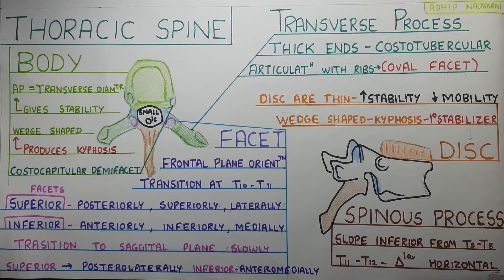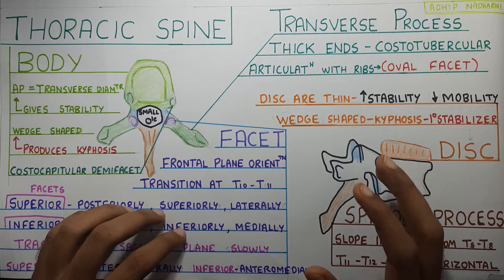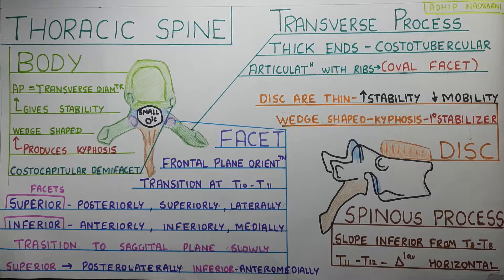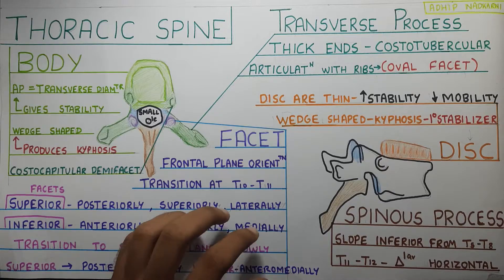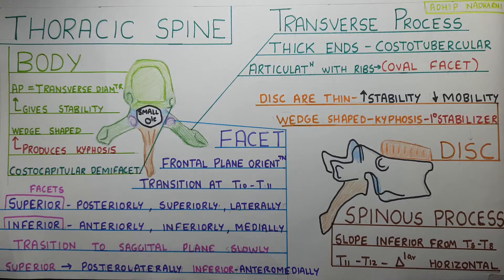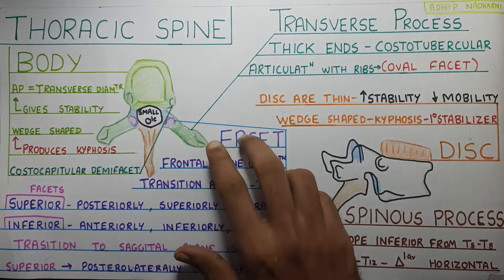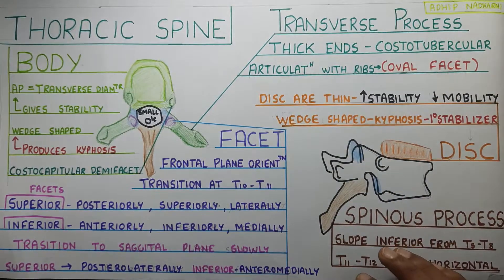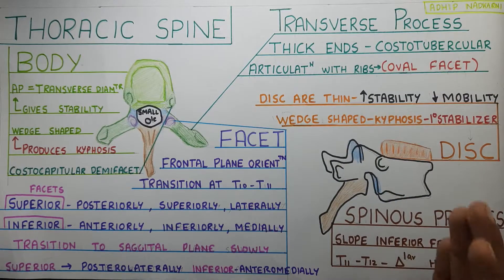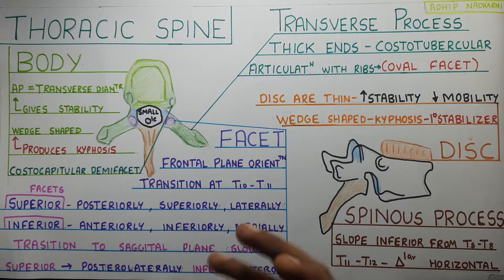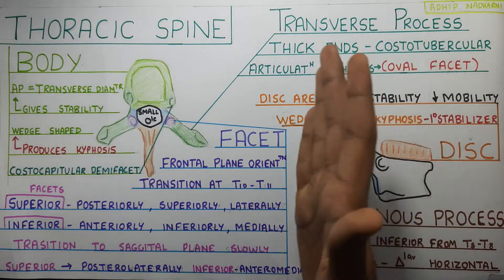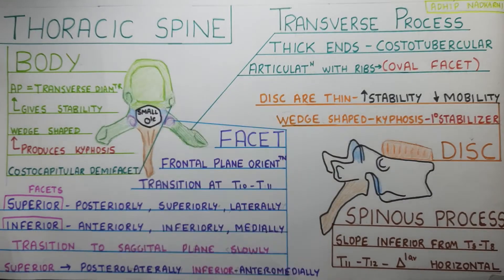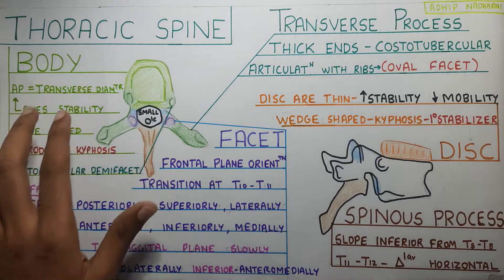In this video, we are going to cover the thoracic spine. We will be learning about the structure of the thoracic vertebra. We will be dividing it into body, the facet, transverse process, spinous process, and we will also be talking about the disc. In future videos, we will go on to the kinematics and kinetics of this joint.